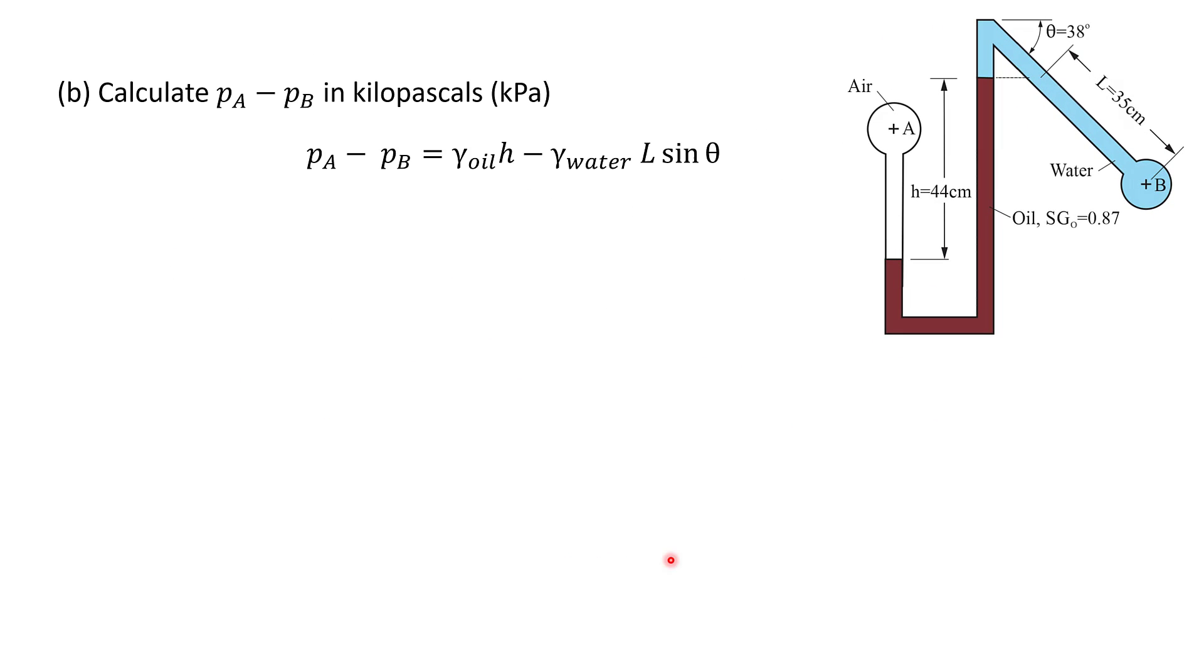So now we can move on to part b. In part b we actually have to calculate the pressure difference pA minus pB in kilopascals using the values given in the problem. And you're given the height h and the length l is 35 centimeters. But first we have to calculate the specific weights of the oil and water.